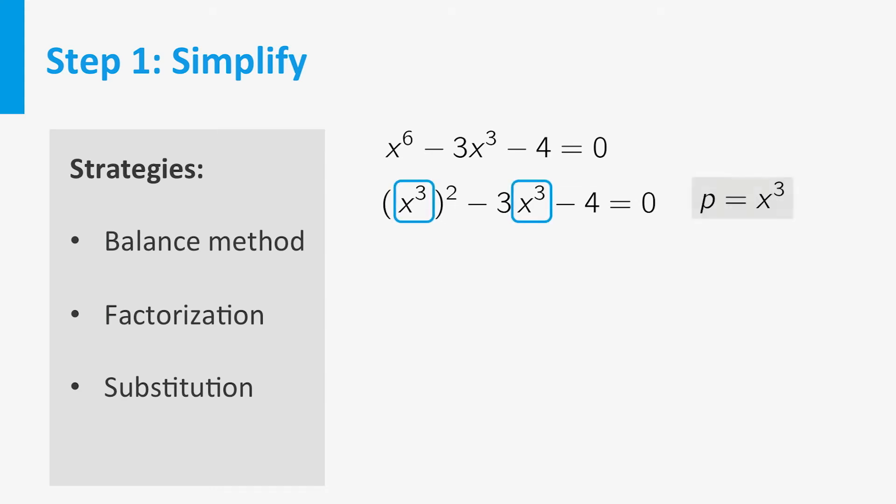Now we introduce a new variable, p equal to x cubed. We can rewrite the equation in terms of p: p squared minus 3p minus 4 equals 0. We call this substitution.